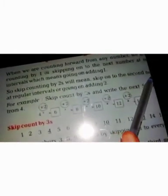This means what is happening? We are going to 1 plus. So skip counting by 2s will mean skip on to the second number at regular intervals or going on adding 2.